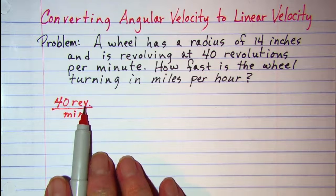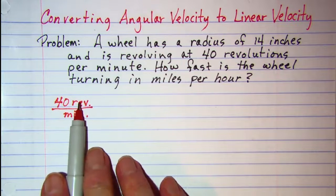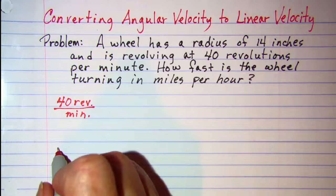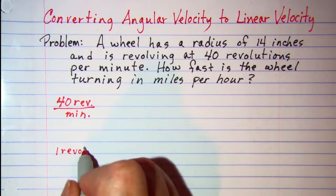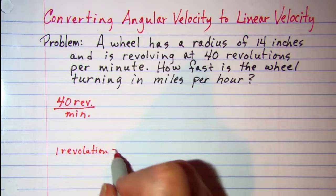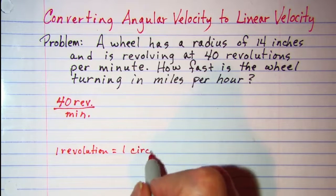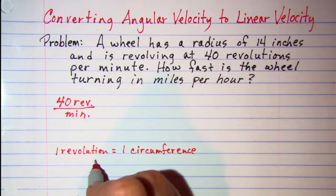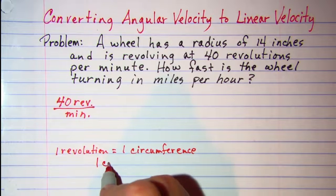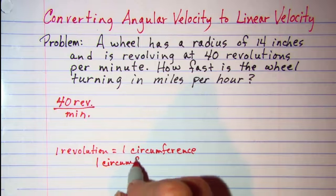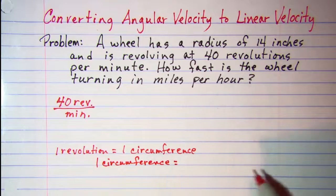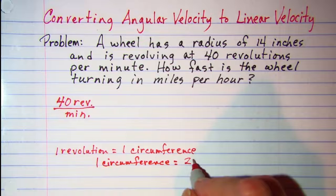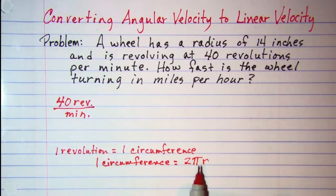Now I'll concentrate on changing the revolutions first. We know that one revolution is the same as one circumference. And we know that one circumference from our formula is 2πr where r is the radius.